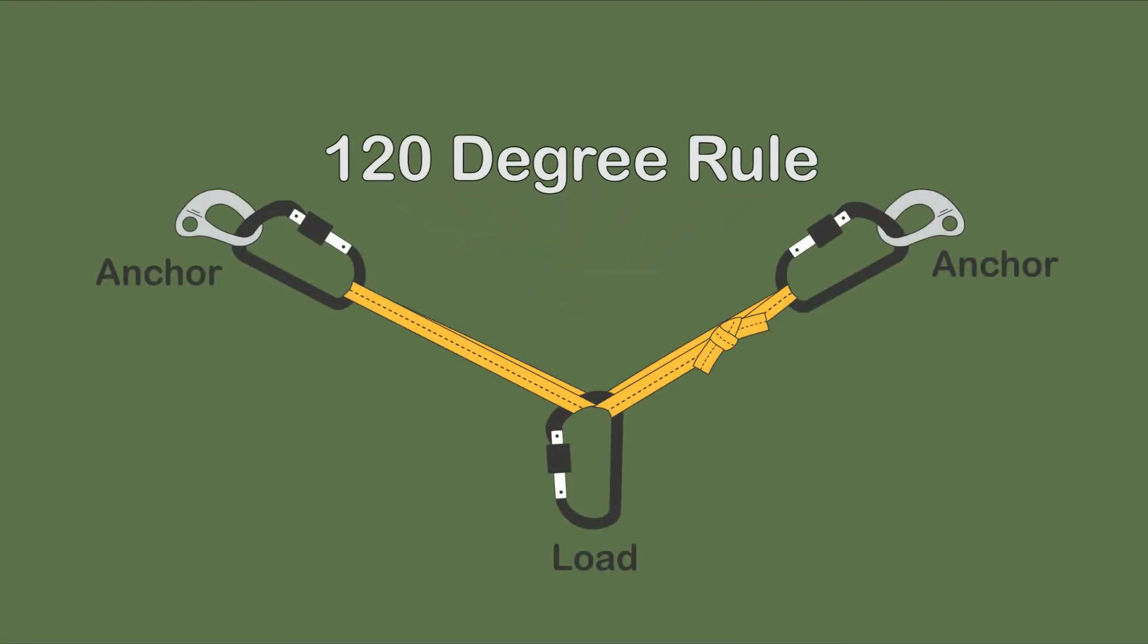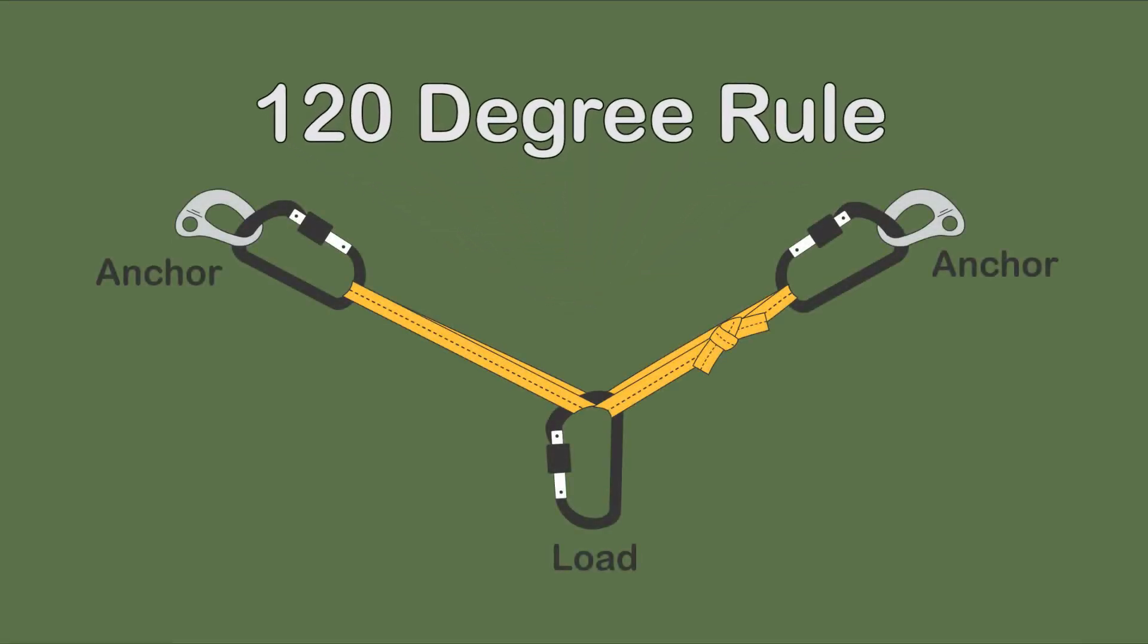Derived from climbing literature, when the angle between two anchors is roughly 120 degrees, the force on each anchor equals the weight of the load. It is a 1:1:1 ratio between the two anchors and the load.